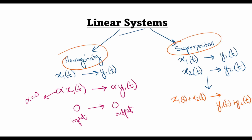In order for a system to be homogeneous, if I apply my input x1(t) multiplied by an arbitrary constant alpha, then the output y1(t) should also be multiplied by the same constant alpha. The principle of homogeneity also gives us the condition that zero input should lead to zero output, because if I put alpha equal to zero, the output should vanish.